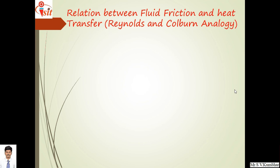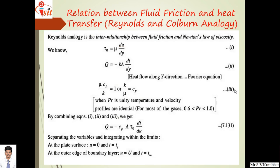That equation is known as Reynolds and Colburn analogy. In fluid mechanics, we have studied the formula for tau — Newton's law of viscosity — tau is equal to mu du upon dy. Reynolds analogy is the inter-relationship between fluid friction and Newton's law of viscosity. According to Newton's law of viscosity, tau equals mu du upon dy — let's call it equation one. Also, heat transfer through conduction: q equals minus k A dt upon dy, considering heat flow along y direction. This is the Fourier equation.